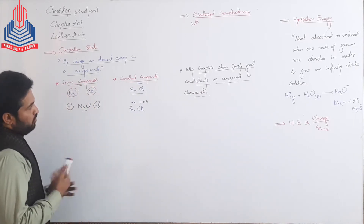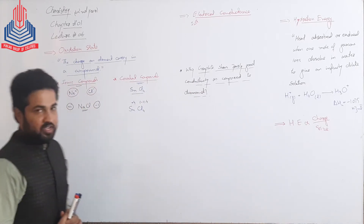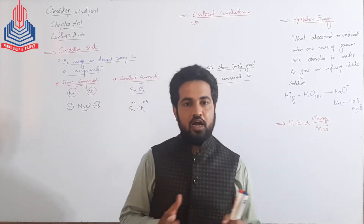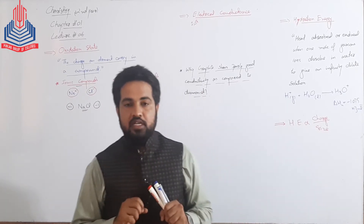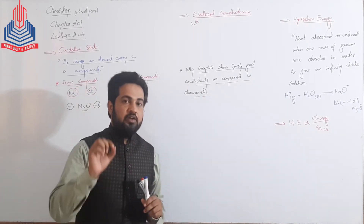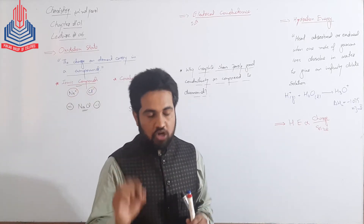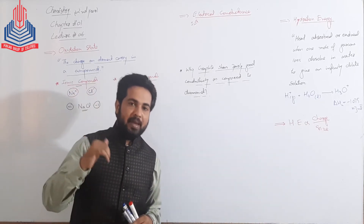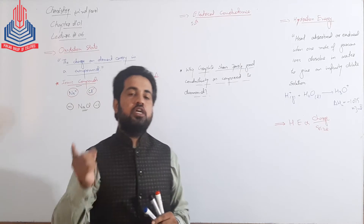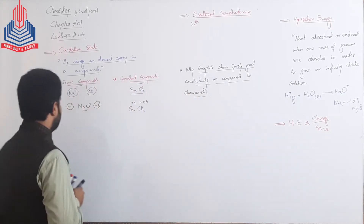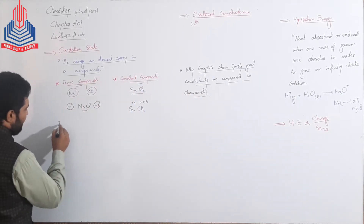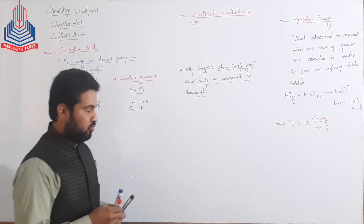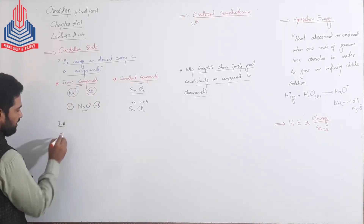اگر ہم periodicity کی بات کریں — periodic behavior کی بات کریں — تو directly یا indirectly, when we are moving along the periods from left to right, then every group number will be the Oxidation State of its elements۔ For example, اگر ہم first A کے elements کی بات کریں — Lithium, Sodium, Potassium, Rubidium — کیونکہ group number one ہے، تو ان کی Oxidation State plus one ہوگی۔